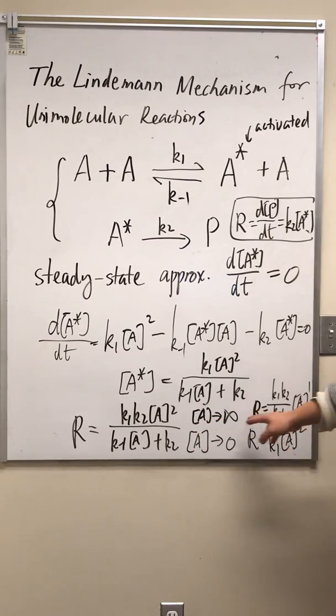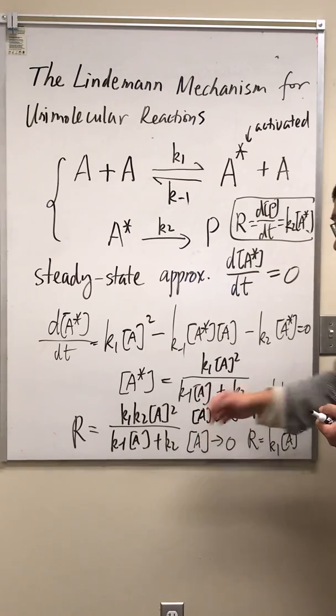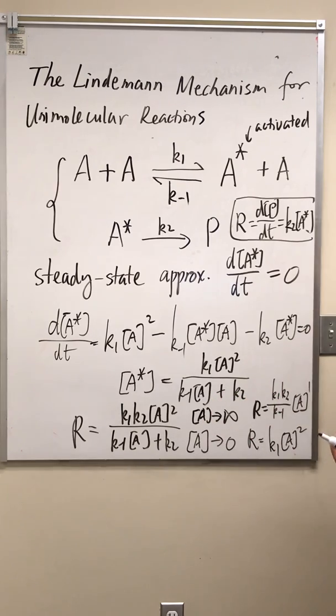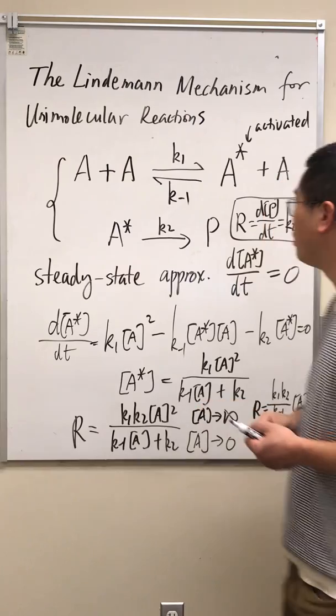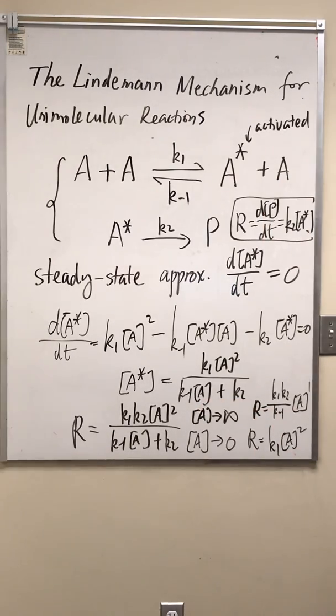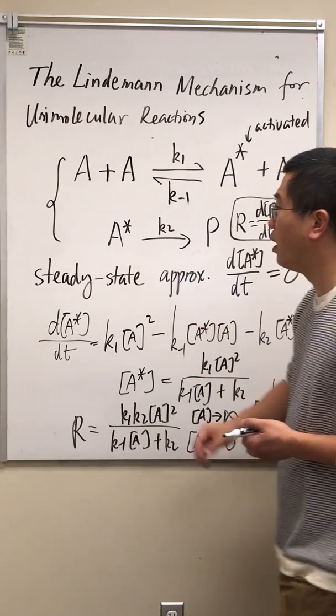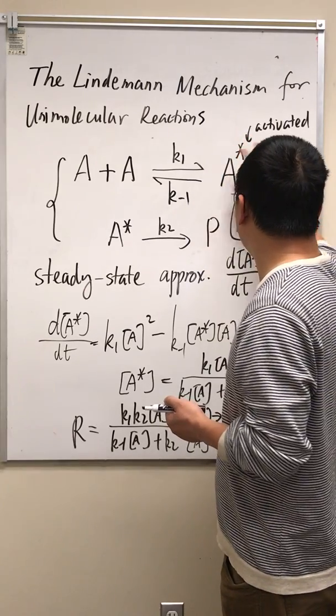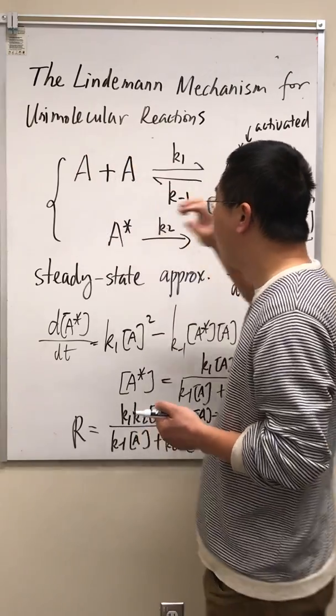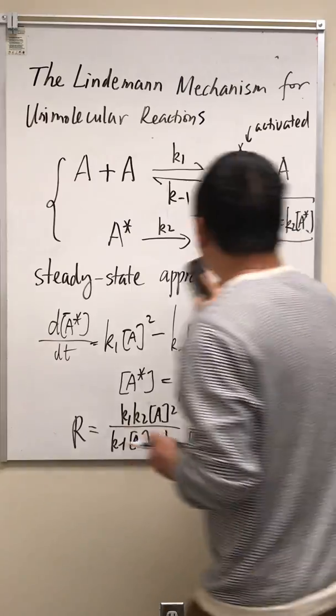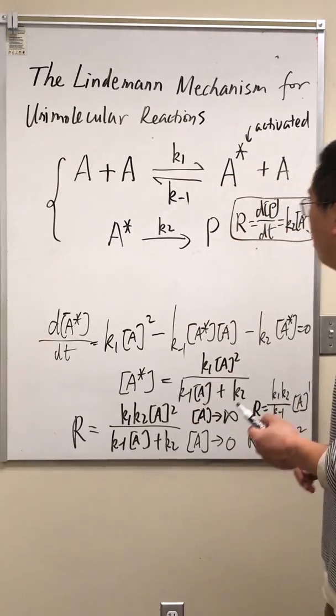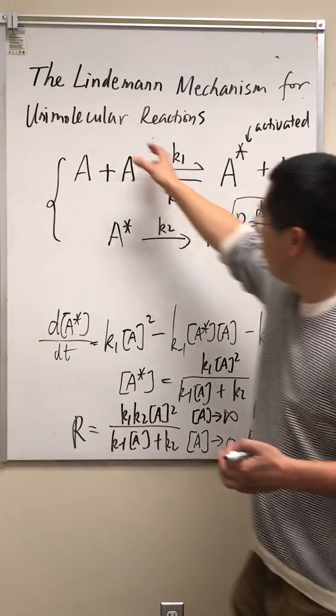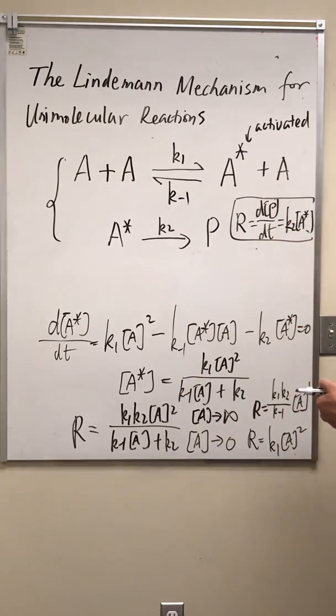Now, what if this A approaches infinity? This is the so-called high pressure limit. Assuming A is a gas phase molecule. So high pressure, high concentration. When A, the concentration of A approaches infinity, well, the collision is no longer the rate limiting step. Instead, the second step is the rate limiting step. And if we have a very high concentration of A, we can assume that these two products and these two reactants are at equilibrium at any given time. Why is that? Again, there are so many collisions. The pressure is high. The concentration is high. We have a lot of A's and A stars. And we can assume that they reach, this reactant side here and this product side here reach equilibrium.